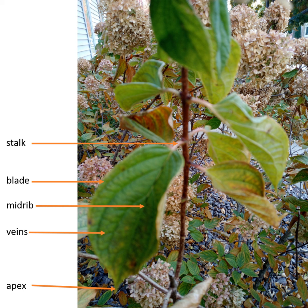The conditions necessary for seed germination include: sufficient warmth, fertile soil, air, and a good seed. A germination where the seed leaves are carried above the soil is called epigeal germination. A germination where the seed leaves are left in the soil is called hypogeal germination.